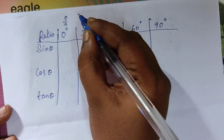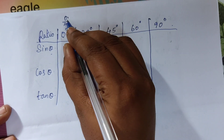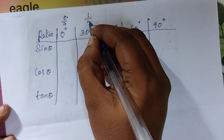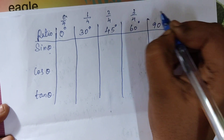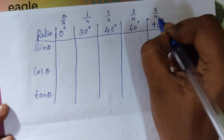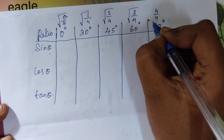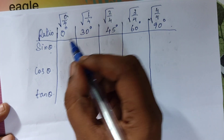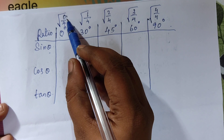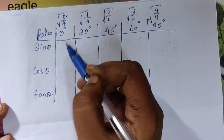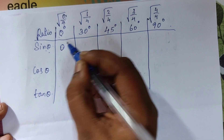For the sine row, we use a pattern. We write the fractions 0/4, 1/4, 2/4, 3/4, and 4/4, then take the square root of each. For sin 0°: square root of 0/4 is zero, since zero divided by any non-zero number is zero, and the square root of zero is zero. So sine zero degree is zero.